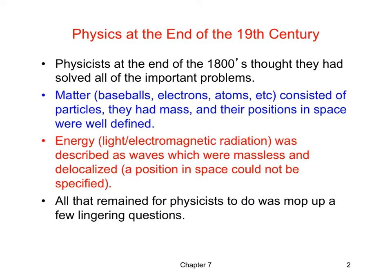Matter consisted of particles. They had mass, their positions in space were well defined. And after much debate, it was sort of settled on that energy was described as waves. And we knew this because electromagnetic radiation could have interference. We saw diffraction patterns and that was only possible if electromagnetic radiation behaved as waves.